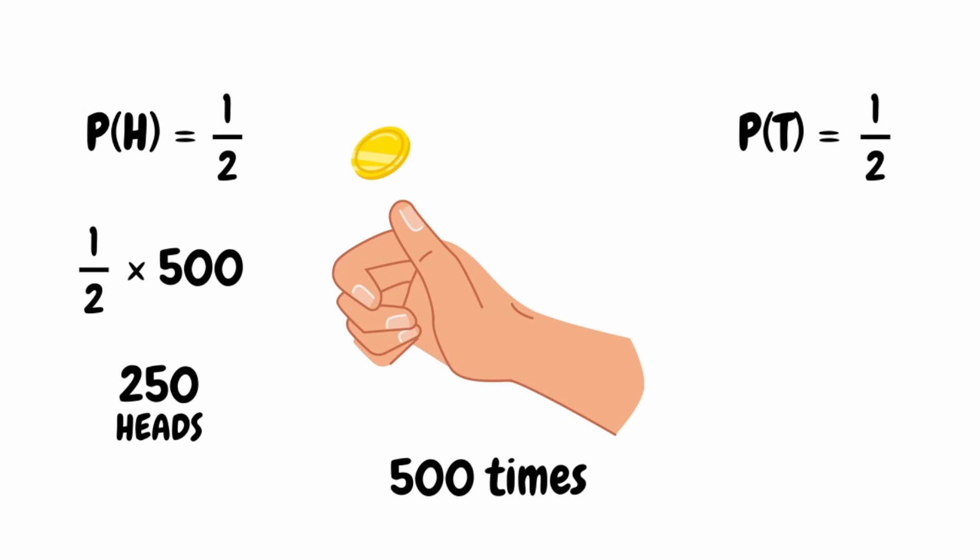For tails, we do exactly the same: take the probability of one half and multiply by 500, which gives us 250. We'd expect the coin to land on tails 250 times. This is an expected frequency — it doesn't mean this will happen exactly, but we would expect it to be somewhere relatively close.